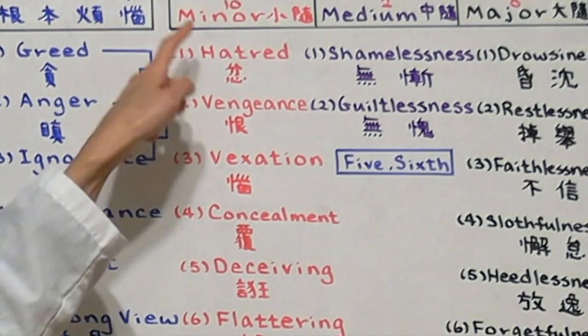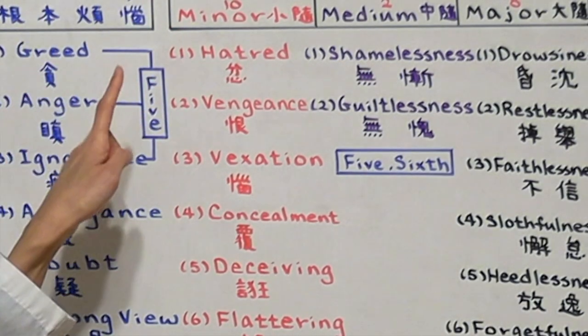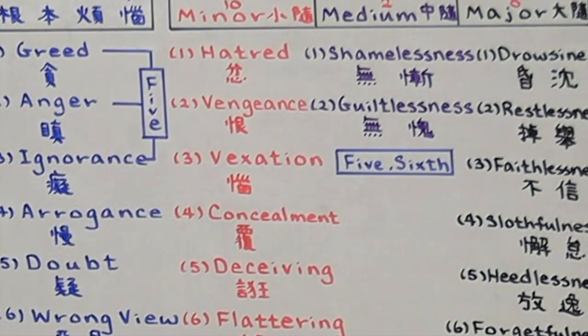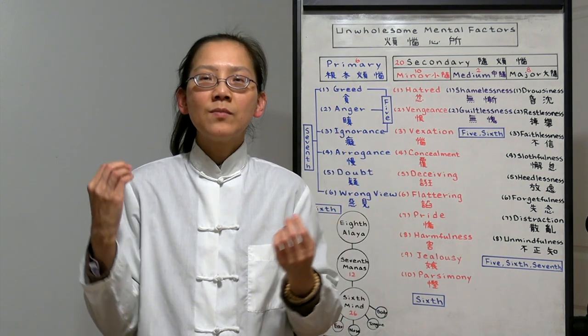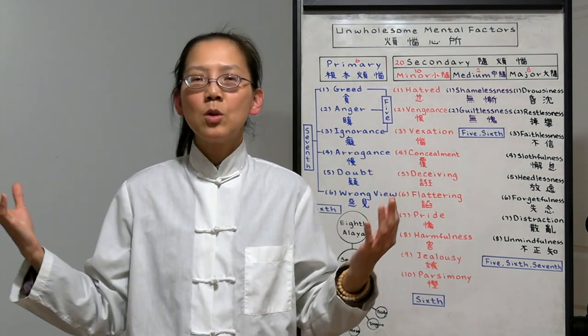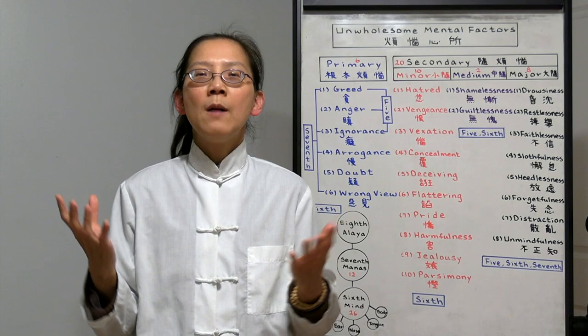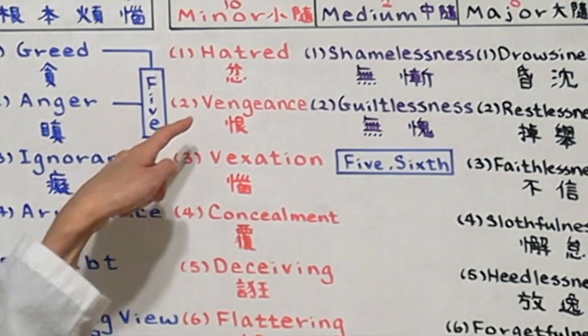Let's first look at the ten minor ones. Number one is hatred. When unpleasant event happens, hatred can arise because of someone's words. Because of the situation, we can explode. That's at the moment.